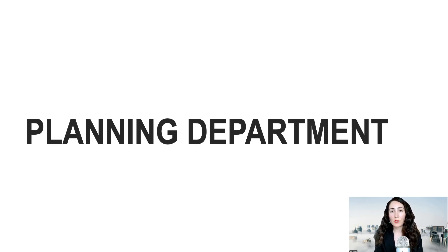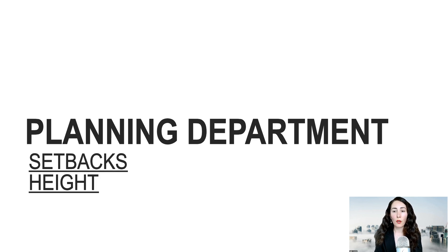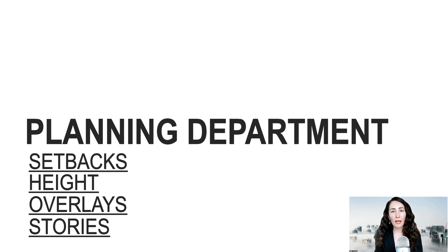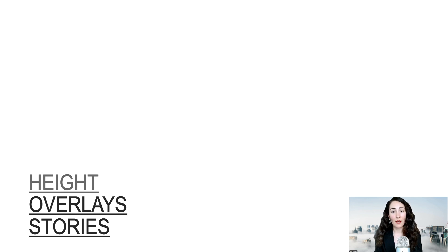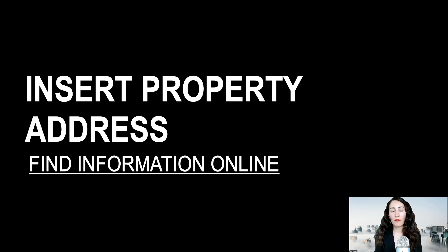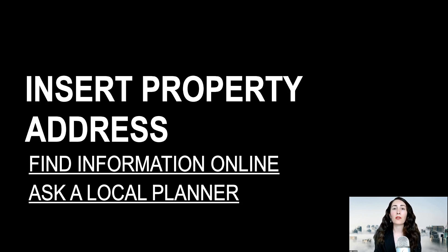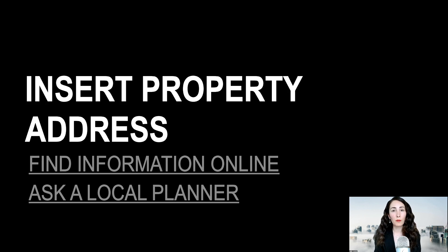You can get information for all kinds of things such as setbacks, building height, zoning overlays, how many stories, and things like that. Most cities and counties have an online database nowadays where you can just insert your address and learn all kinds of facts about your property straight from the database. Or in other cases, you can go straight to the planning department in person and talk to a local planner and get the information that way — whichever you're comfortable with.